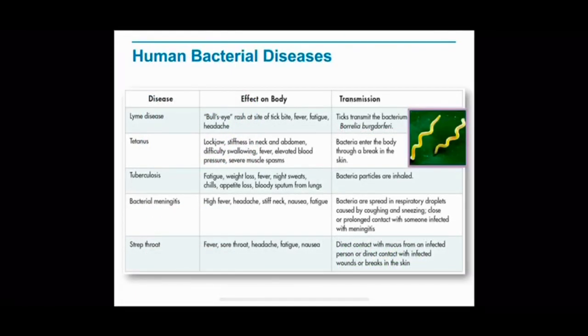We have several examples of human bacterial diseases. First, we have Lyme disease. Its effects on the body include a rash on the site of the tick bite, fever, fatigue, and headaches. It gets transmitted through the bacterium Borrelia. We also have tuberculosis, which includes fatigue, weight loss, fever, night sweats, chills, and more. It transmits through bacterial particles that are inhaled.